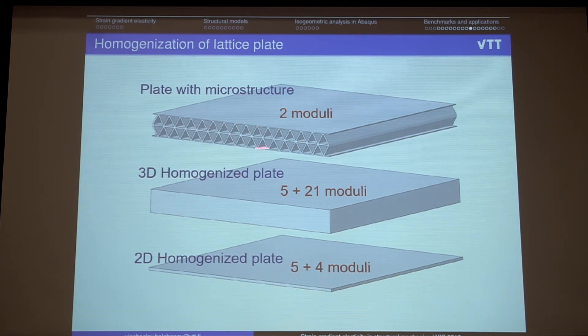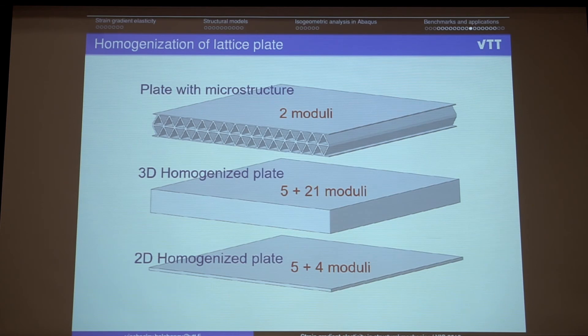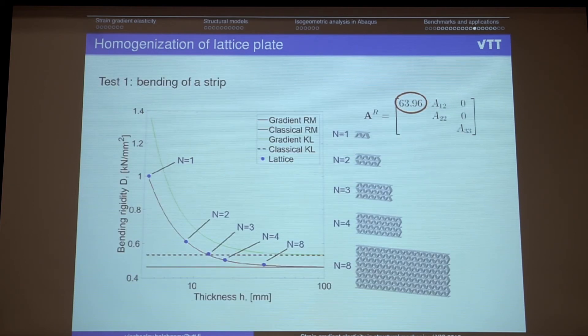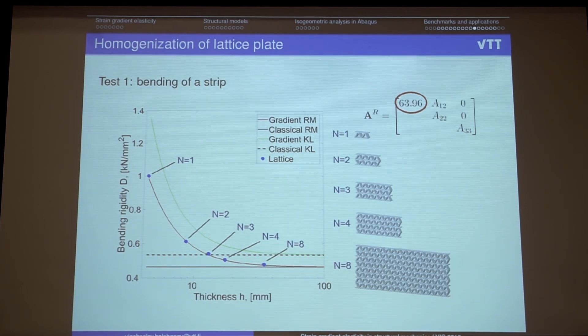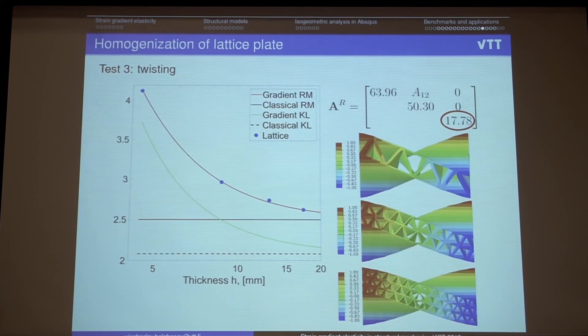And last example regarding to the plate. Plate with microstructure. So we use 2D plate model. Meaning that we need to obtain four additional... So this is anisotropic plate. And we need to use anisotropic strain gradient elasticity. And we have four additional moduli for it. And we can define them step by step by using different tests where we exclude all other constants. And step by step we can define all the parameters.